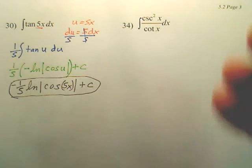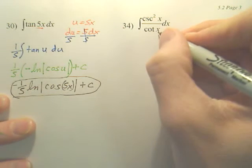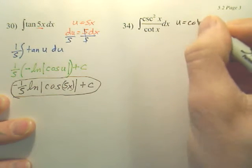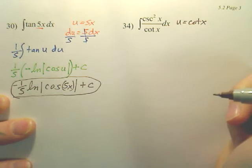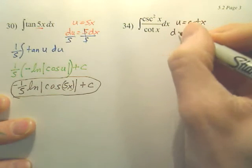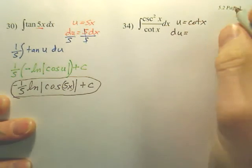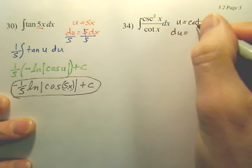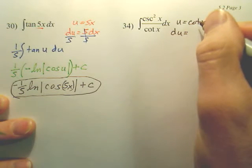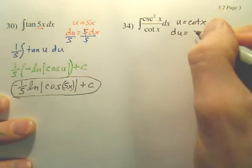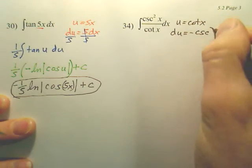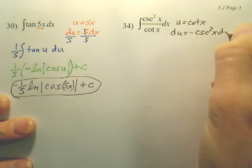Now, for number 34, there's two ways of doing this. I'm going to first do a u substitution. If I set my bottom to u, my top would end up being the derivative of cotangent is negative cosecant squared x dx.